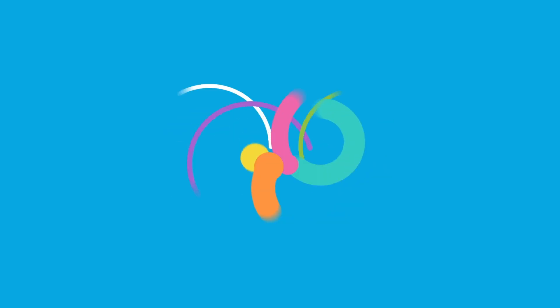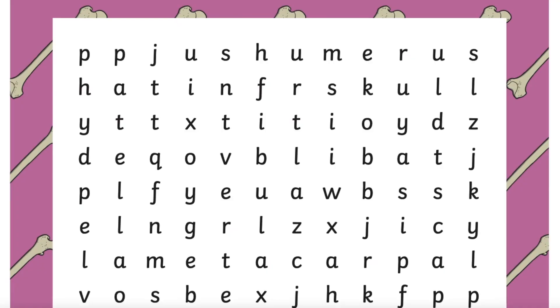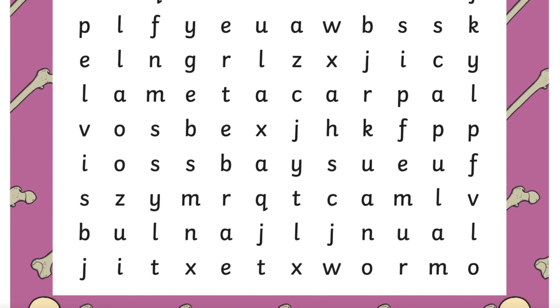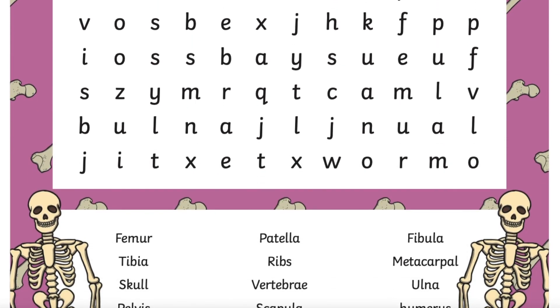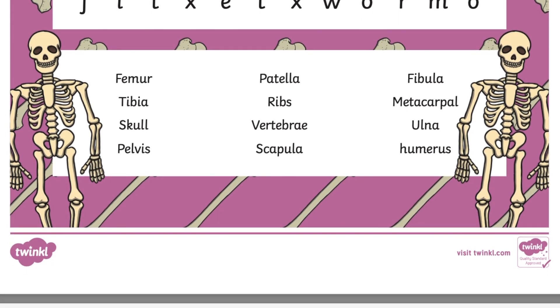Help your children learn all about the human skeleton with these wonderful resources. Learn some key vocabulary with this human skeleton word search. Children will become familiar with bones in their bodies as they read and locate bone names. Use this handy activity in your science lessons to help your pupils practice what they already know or fill in any existing gaps of knowledge. Once children have found all the words in the grid, why not encourage them to explain where each bone is positioned in the body?